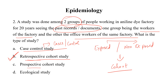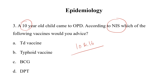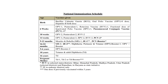If you want to know more about types of cohort studies, I will provide the link in the description. Now the next question: a 10-year-old child came to OPD. According to the National Immunization Schedule, which vaccine would you advise? Options are TD vaccine, Typhoid vaccine, BCG, and DPT. If you know the National Immunization Schedule, you can answer this directly. At 10 years and 16 years, we give the TD vaccine. So the answer is TD vaccine.